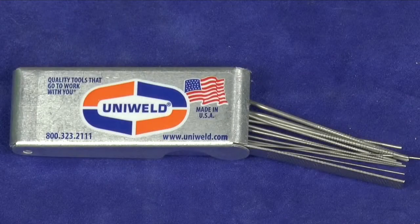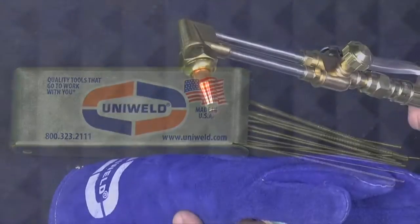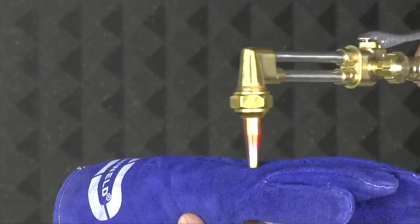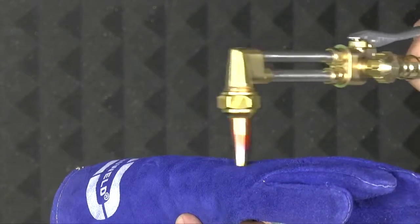Uniweld Tip Savers are the tools designed for this procedure. Start by cleaning any soot or debris left on the tip end. I'm going to use the cuff of a glove, but a towel or rag works as well. Rub the tip end on a clean part of the glove.